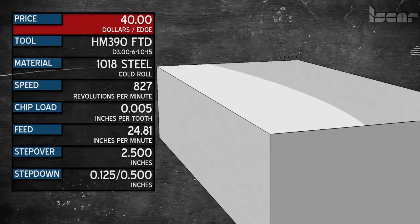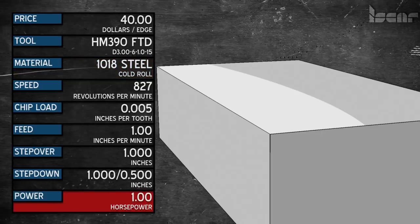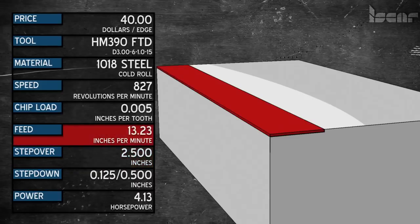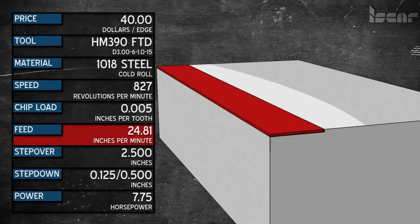So how do we get the most for our money? We can start with a little math. 1018 steel cuts at about 1 cubic inch per horsepower. We went 0.125 deep and stepped over 2.5 inches at 24.8 inches per minute. So our area is 0.125 times 2.5 is 0.3125.